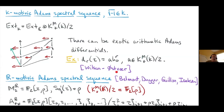Wilson and Østvær have examples where a differential d_r hits something of the form a times H-naught to the r, where a is a non-zero element of Milnor K-theory. This really does occur in certain situations. Their argument uses prior knowledge of the étale cohomology of the field to deduce that the differential had to occur — so currently information is flowing from known arithmetic toward this motivic homotopy theory.